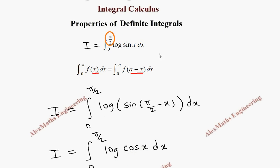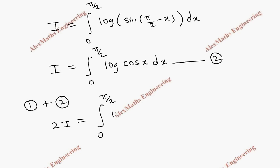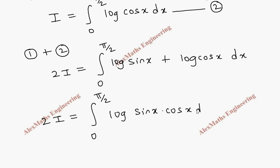Let's take the first expression as I equals integral 0 to pi/2 of log sin x dx, and the second expression as integral 0 to pi/2 of log cos x dx, and we are going to add both. So expression 1 plus 2 gives us 2I equal to integral 0 to pi by 2 of log sin x plus log cos x dx. Now applying the log rule, log a plus log b equals log ab, so this becomes log(sin x · cos x) dx.